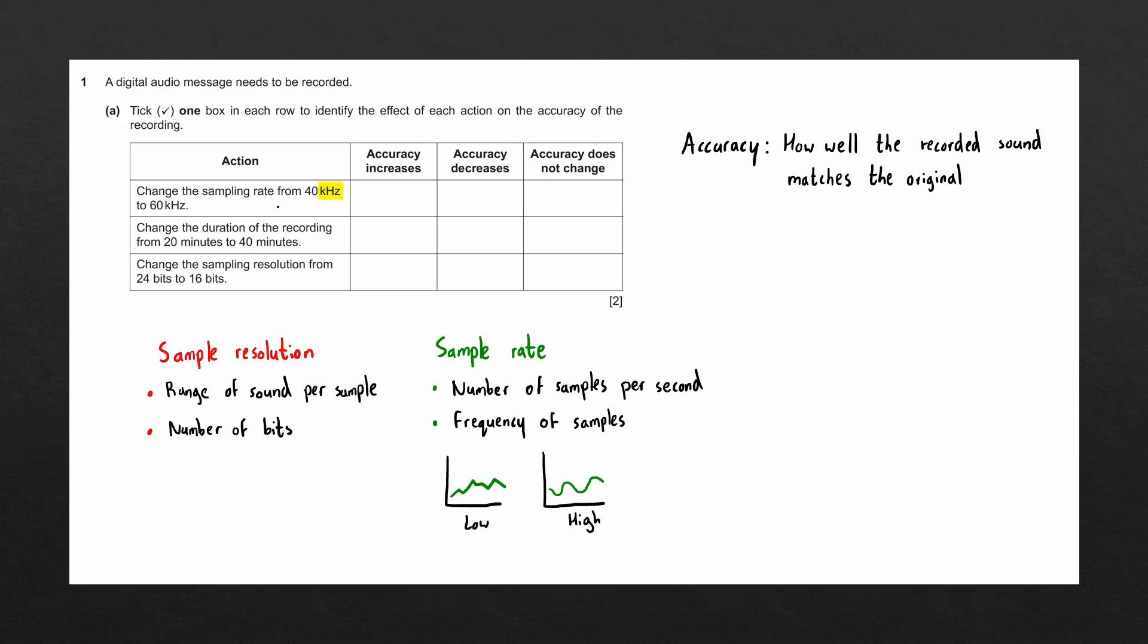This means that if we have a recording that has a sampling rate of 40 kilohertz, the amplitude of the sound wave is being measured and recorded 40,000 times per second. If we increase that to 60 kilohertz, then the accuracy of the sound recording is going to increase.